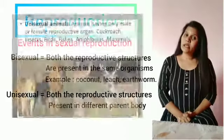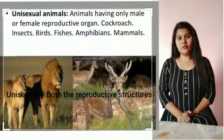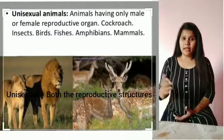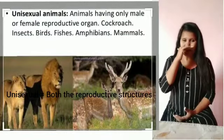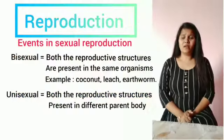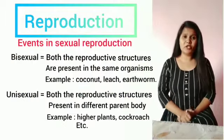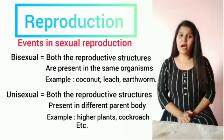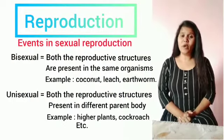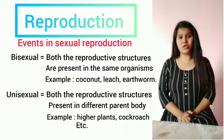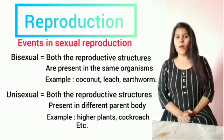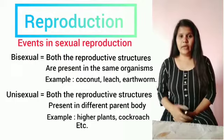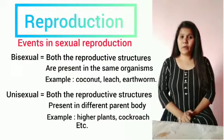These cases also happen in animals. In case of animals like leech, tapeworm, sponge, and earthworm, they are bisexual because they possess both reproductive structures in a single parent body. So those we can call hermaphrodites.